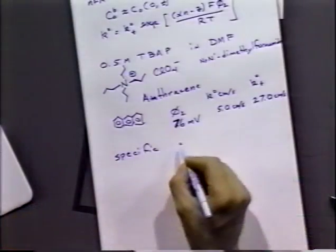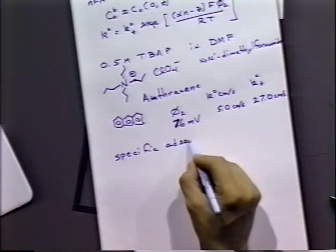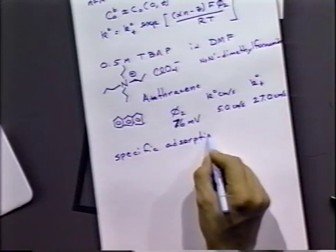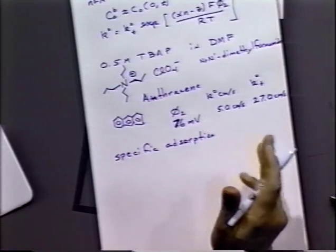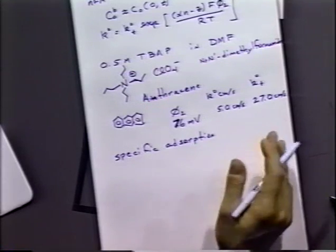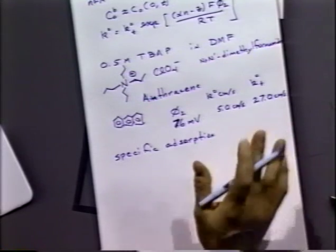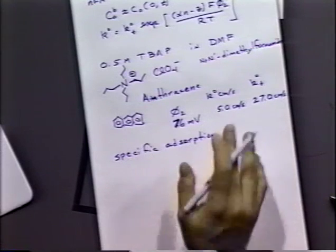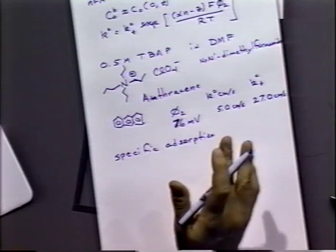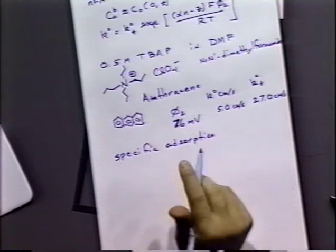Now, these are all nonspecifically adsorbed species, but that's not the only possibility — we can also have specific adsorption. For example, halide ions in particular are very prone to that: they adsorb strongly and specifically on metals like platinum and mercury. What happens then is that the phi-2 effect becomes significantly altered.